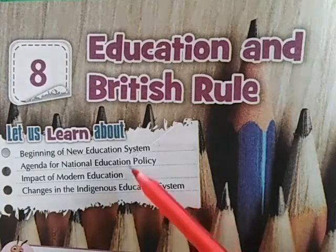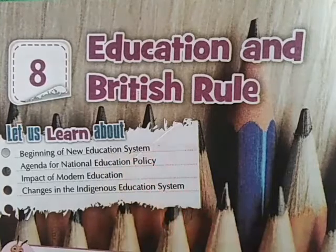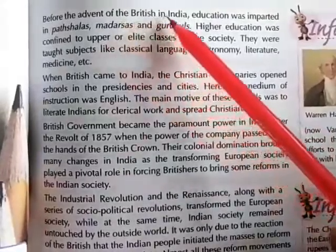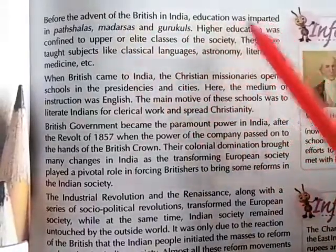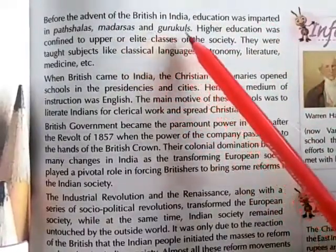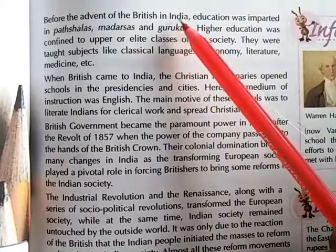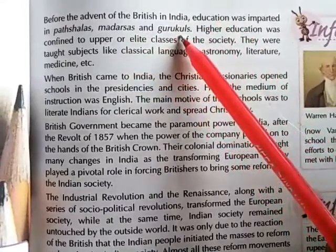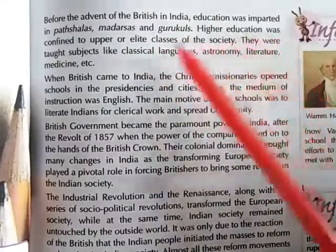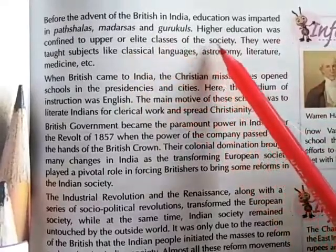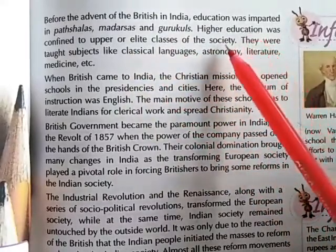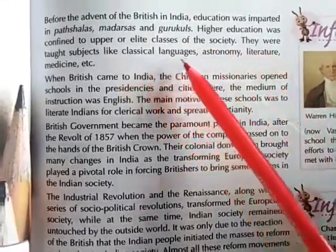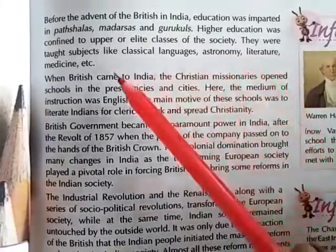Today we are going to start with the beginning of the new education system. Before the advent of the British in India, education was imparted in Pathshalas, Madrasas, and Gurukuls. The higher education was confined to the upper allied classes of the society, and it covered classical languages, Astronomy, Literature, Medicine, etc.